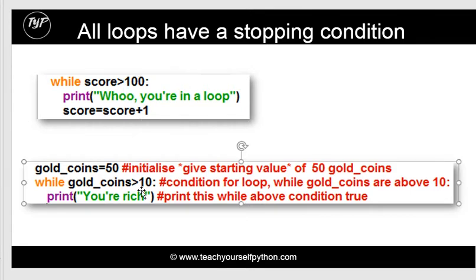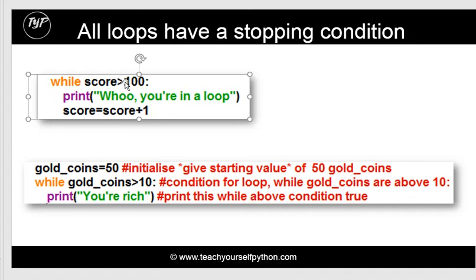And every loop has what's called a stopping condition. Here's an example: while the score is greater than a hundred, keep printing this. Now this is the stopping condition — while the score is greater than a hundred, keep printing this. The things inside the loop would stop or fail to execute if this condition was met. We'll look at that more closely as we go through the tasks.